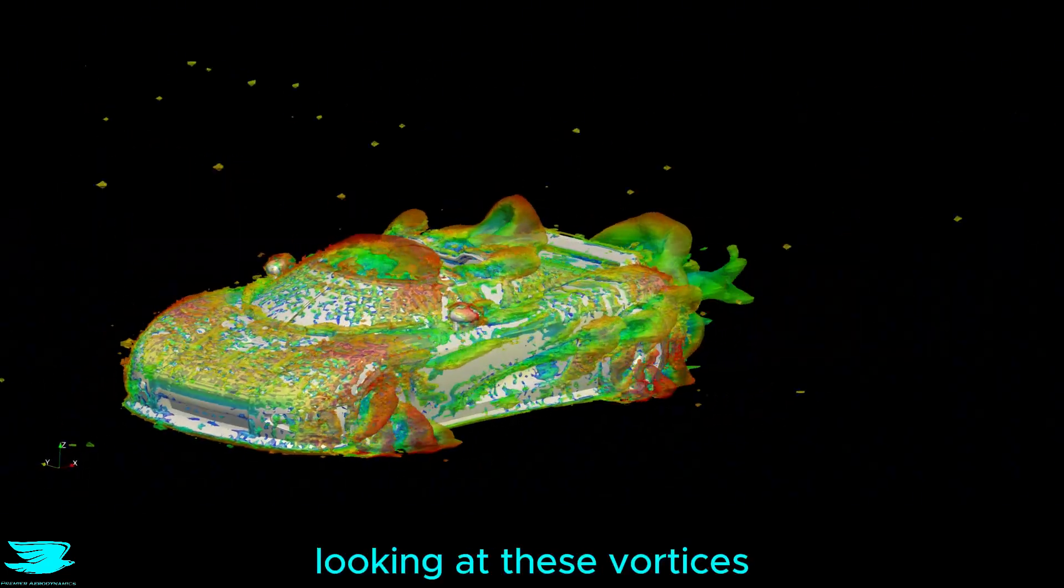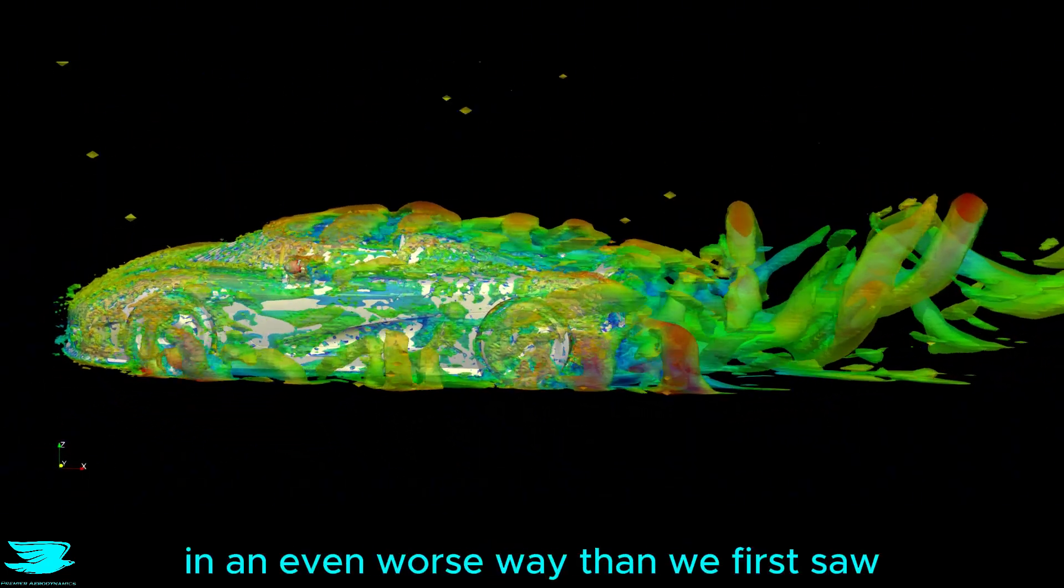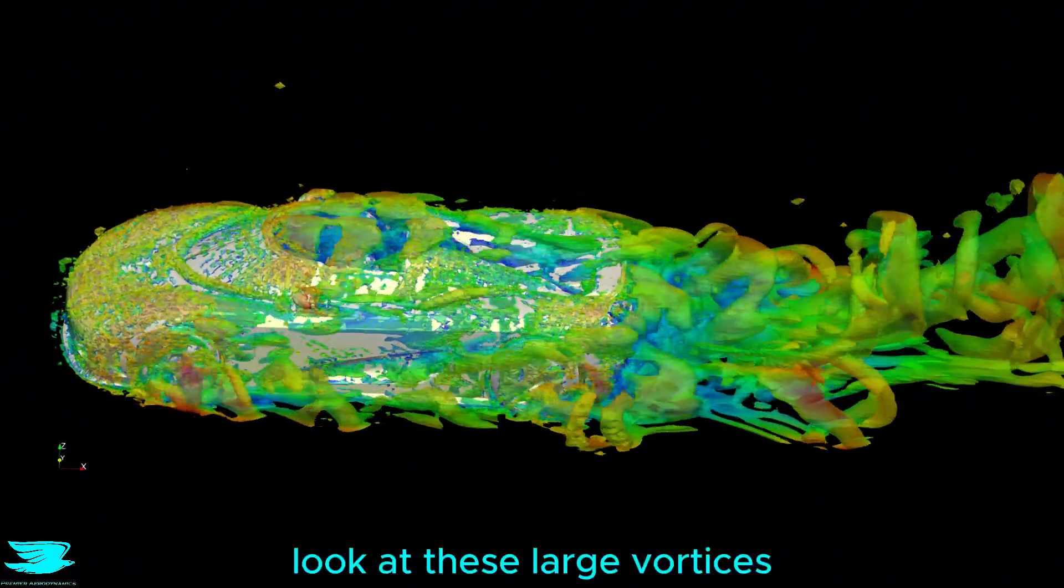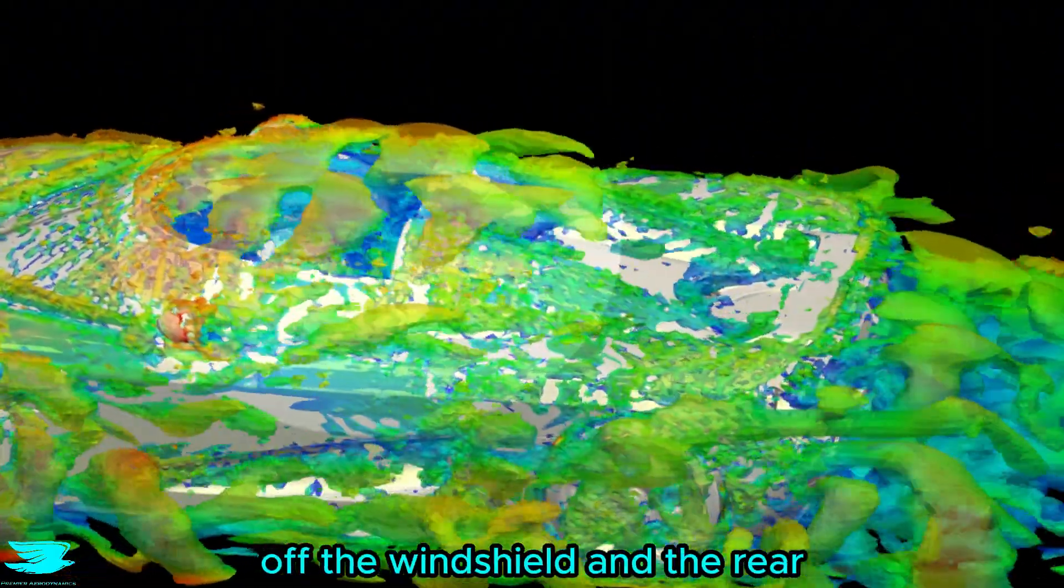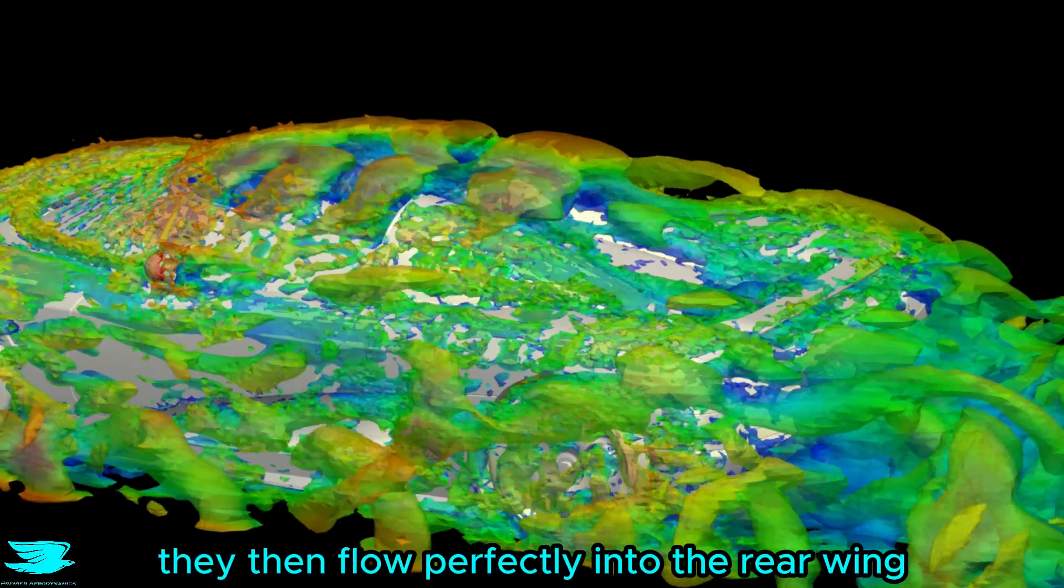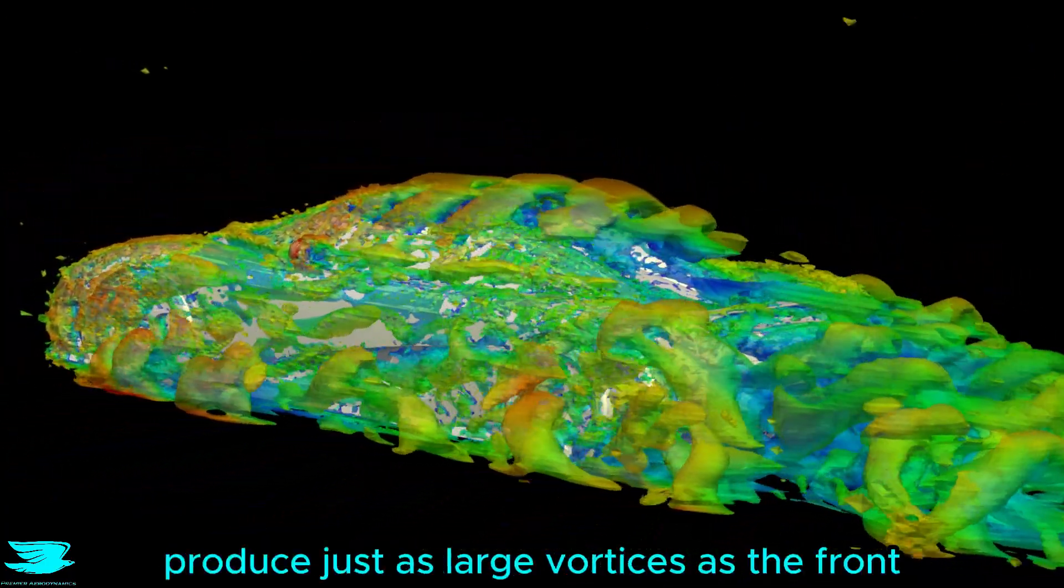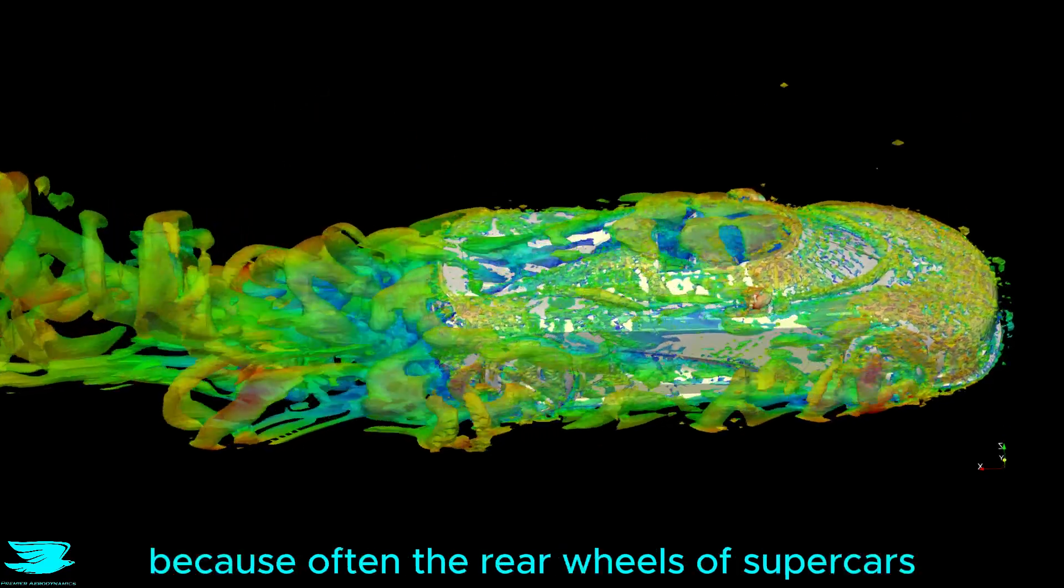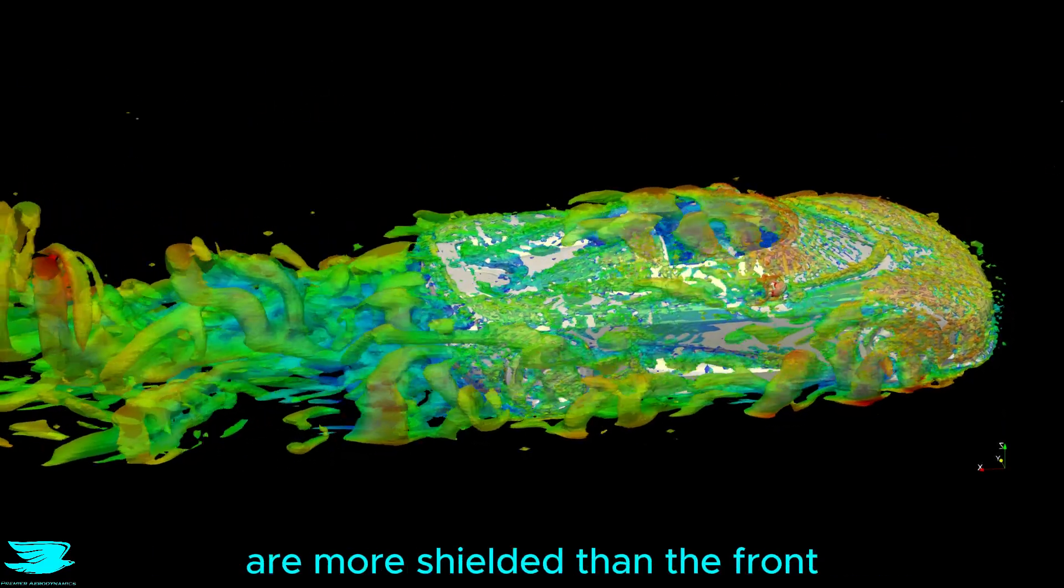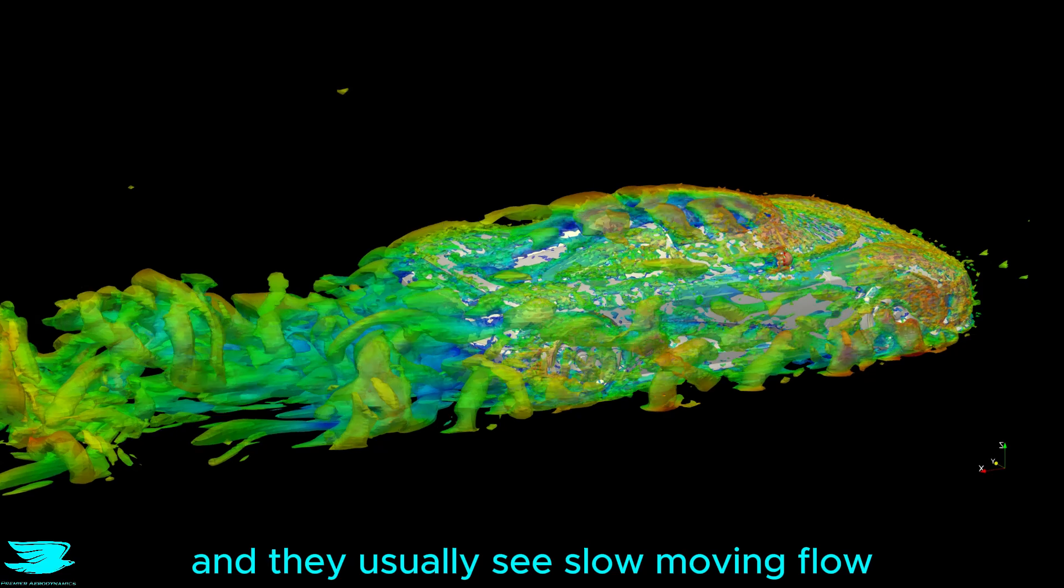Looking at these vortices, I have to say that the roof is impacting the wing in an even worse way than we first saw. Look at these large vortices of the windshield and the rear, they then flow perfectly into the rear wing. The rear wheels produce just as large vortices as the front, and that is a little surprising because often the rear wheels of supercars are more shielded than the front and they usually see slower moving flow.